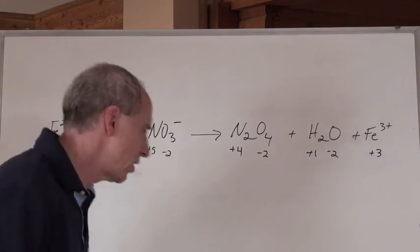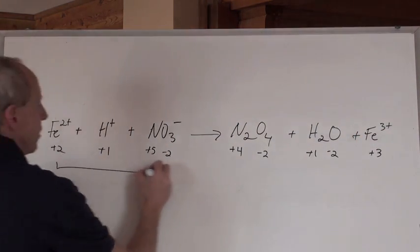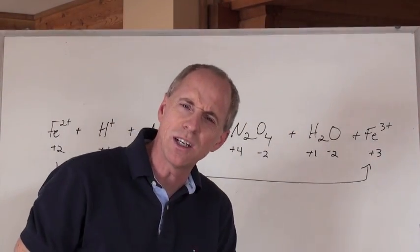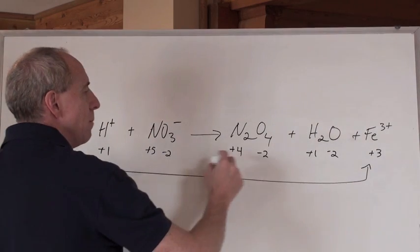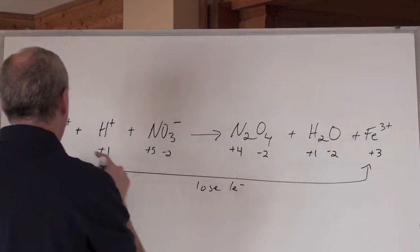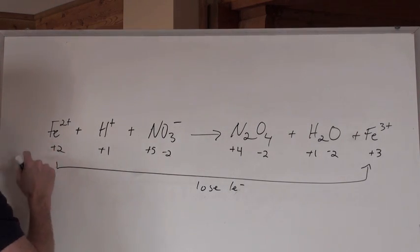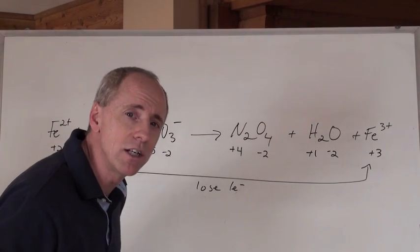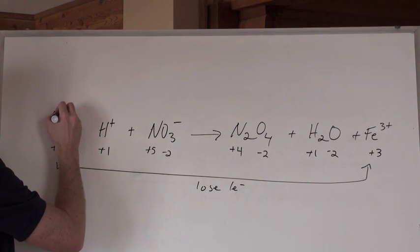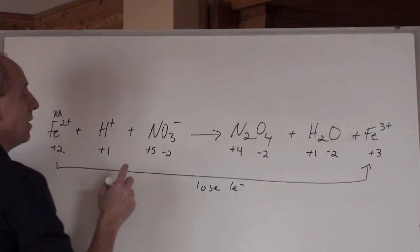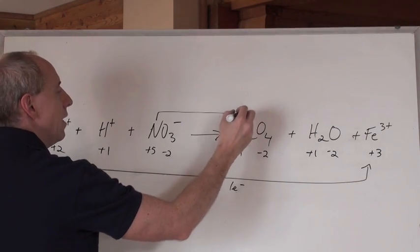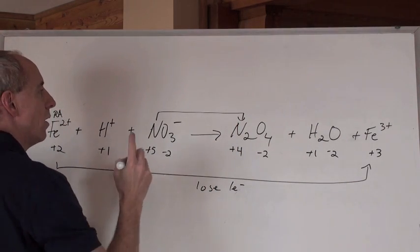What do we got here for a change? We got the iron going from plus 2 to plus 3. If you're becoming more positive, that means you're losing electrons and becoming more positive. So, that's lose 1 electron. And you know what that means? That means that that is undergoing oxidation. And oxidation is the reducing agent. So, that's the Ra. And then that means this, that the nitrogen, which is going from plus 5 to plus 4, from here to here, is just gaining 1 electron.